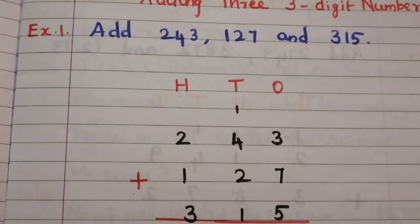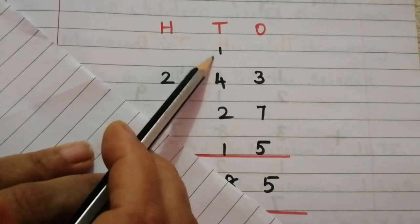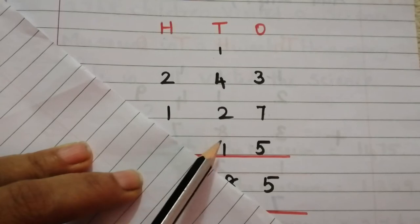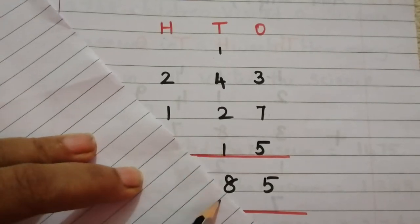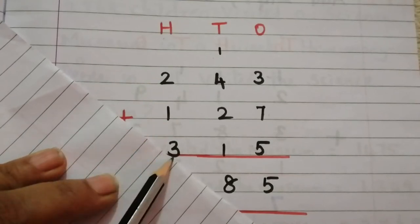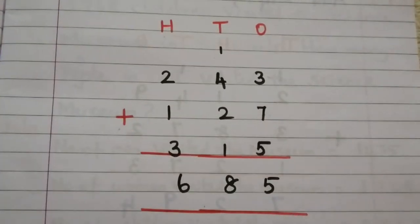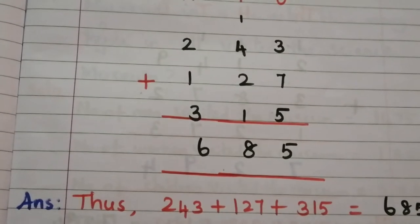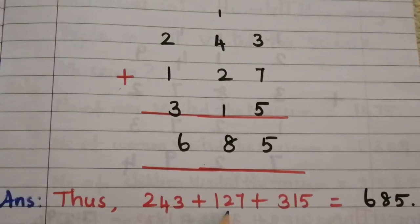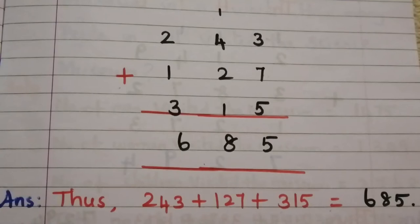If we add the ones column: 7 plus 3 is 10, 10 plus 5 is 15. Put 5 here and carry 1. Then 4 plus 1 is 5, 5 plus 2 is 7, 7 plus 1 is 8. Next, 2 plus 1 is 3, 3 plus 3 is 6. So 243 plus 127 plus 315 is equal to 685.